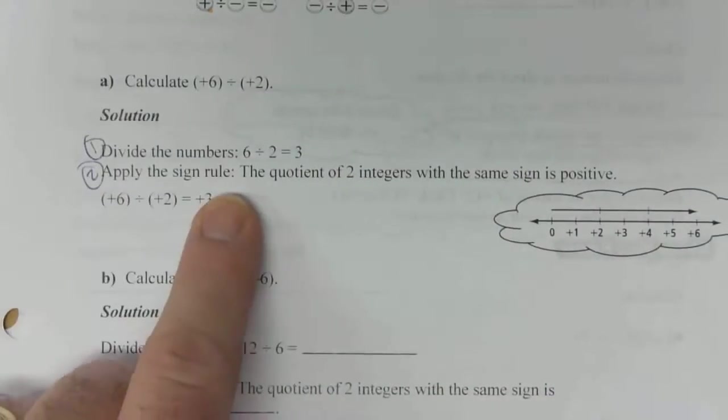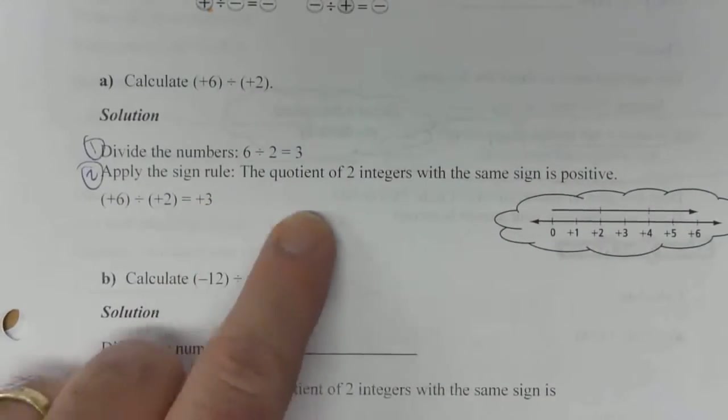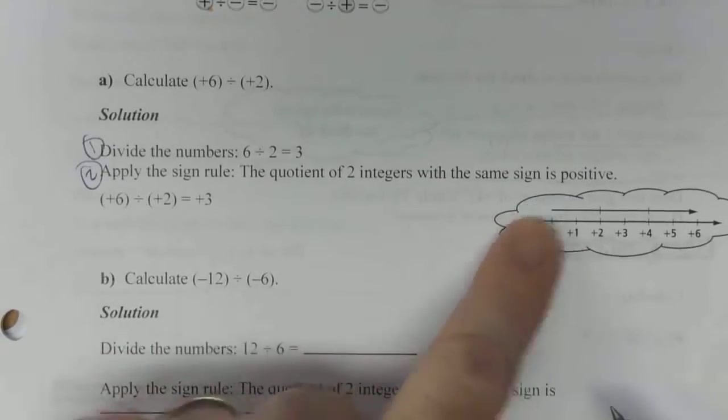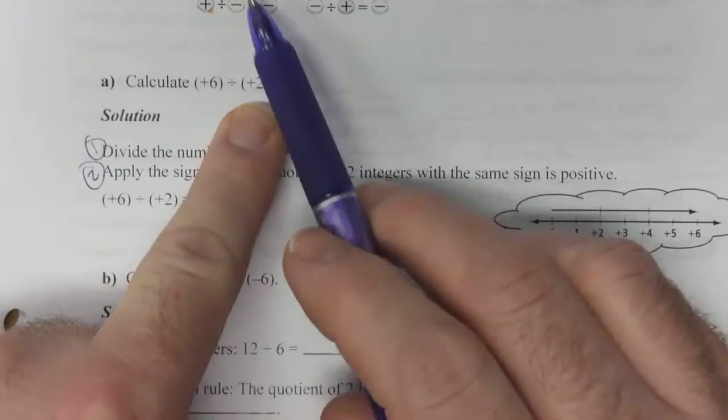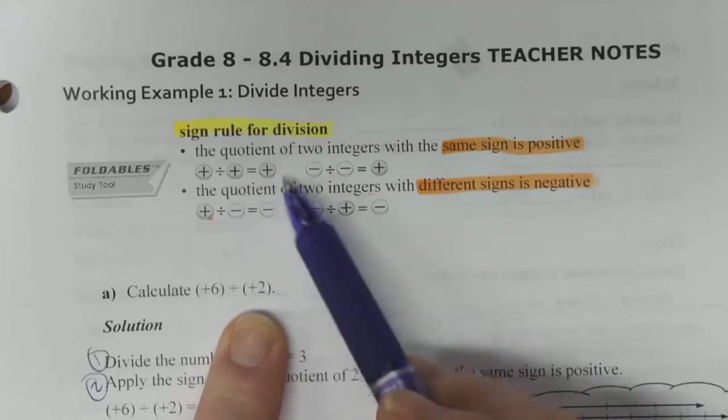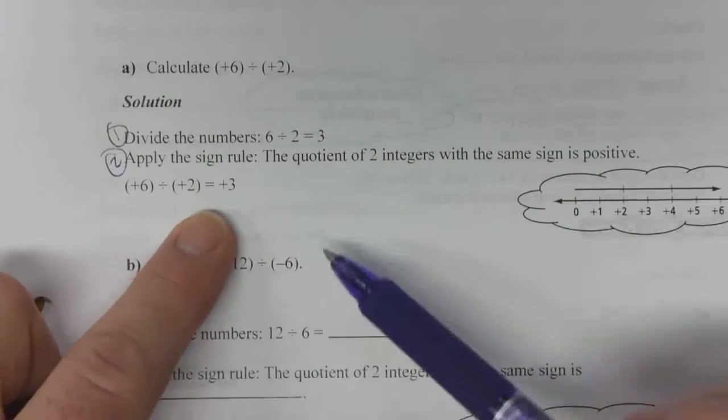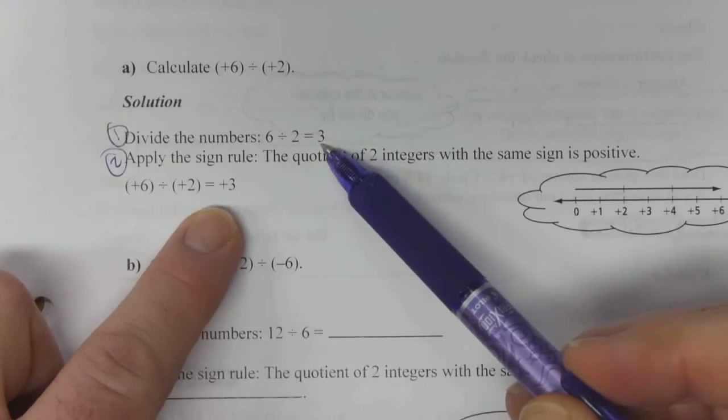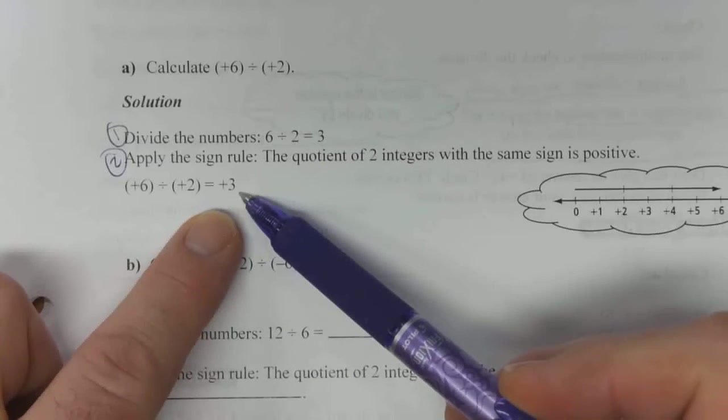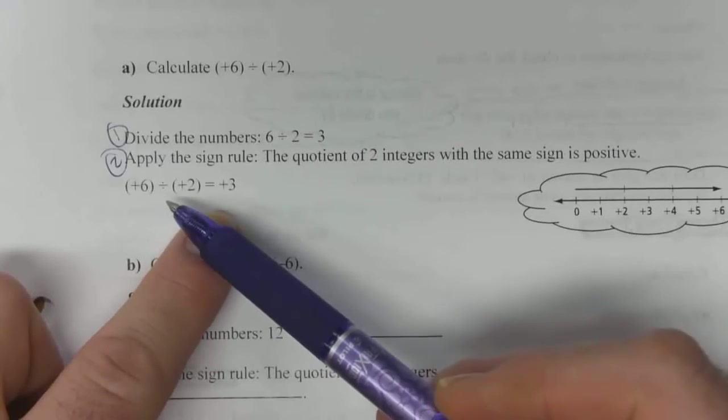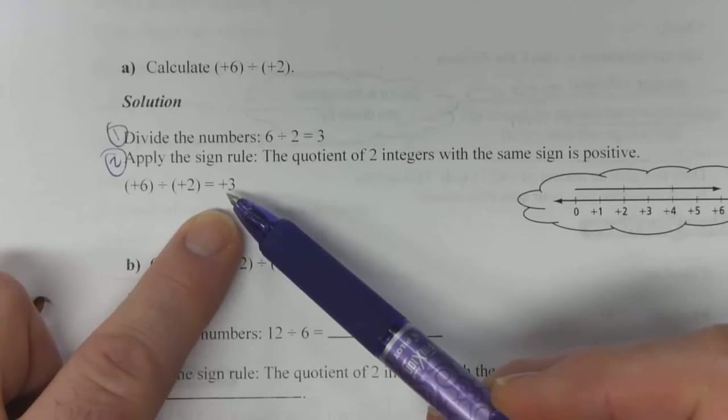Step 2, apply the sign rule. The quotient of two integers with the same sign is positive. This is positive, positive. Go back up to your rules. Positive and positive gives you a positive answer, so it's not just 3, it's positive 3.